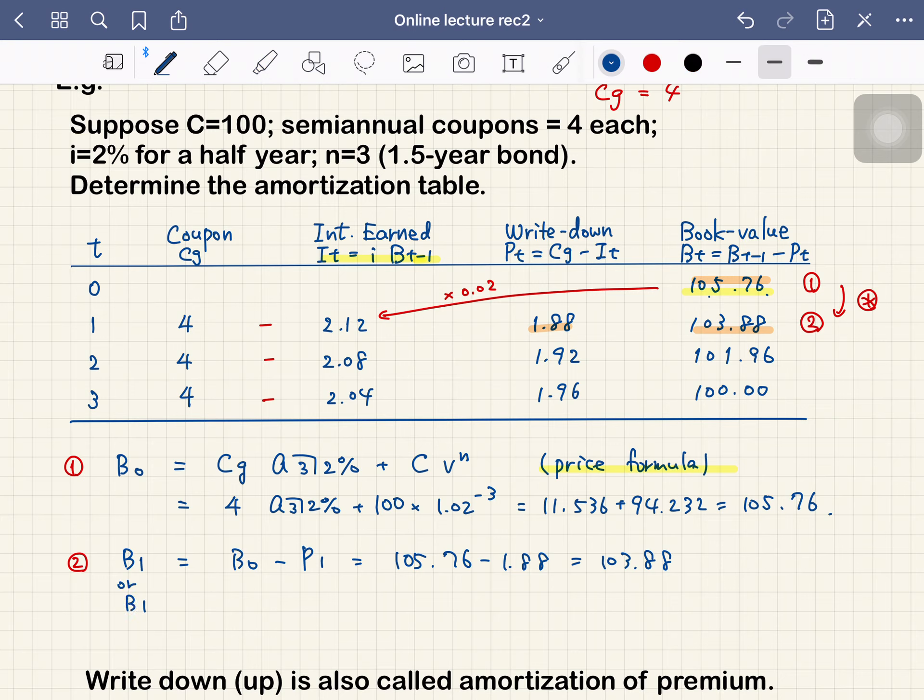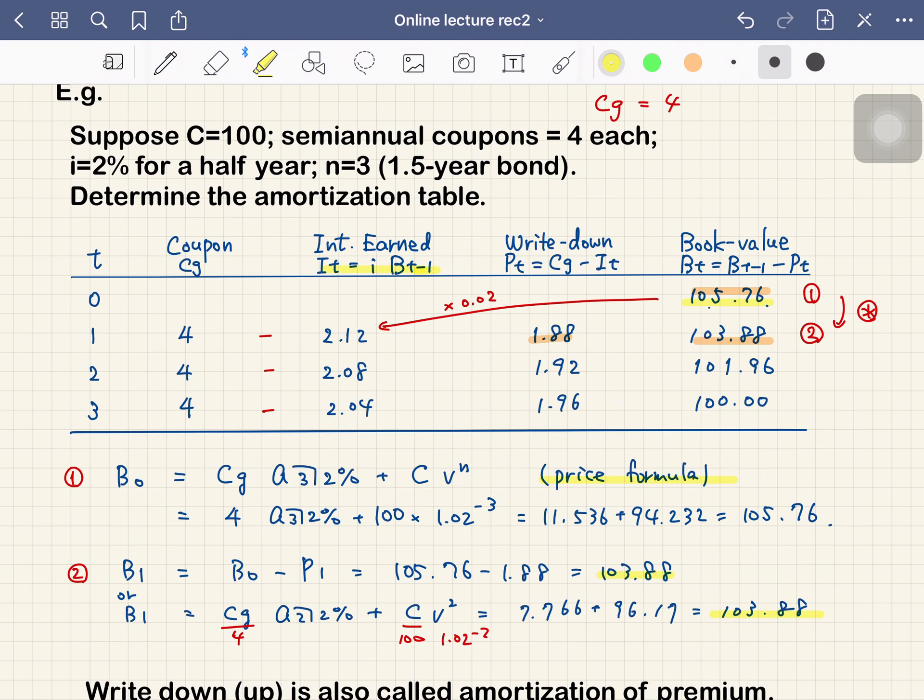Alternatively, B1 equals Cg times A angle 2 at 2%, plus C times v to the power 2. This equals 4 times A angle 2 at 2%, plus 100 times 1.02 to the negative 2, which is 7.766 plus 96.17, approximately 103.88. This is how to make the amortization table for bonds.